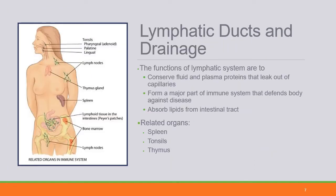The lymphatic ducts and drainage — know the overall location and functions. They help recollect, filter, and return fluid and plasma that has leaked out of the capillaries back into the venous system. They're also a huge part of the immune system, filtering out pathogens in the interstitial spaces to prevent them from entering the vascular space and damaging critical organs. They also absorb liquids from the intestinal tract. The spleen, tonsils, and thymus are all part of the lymphatic and immune system.